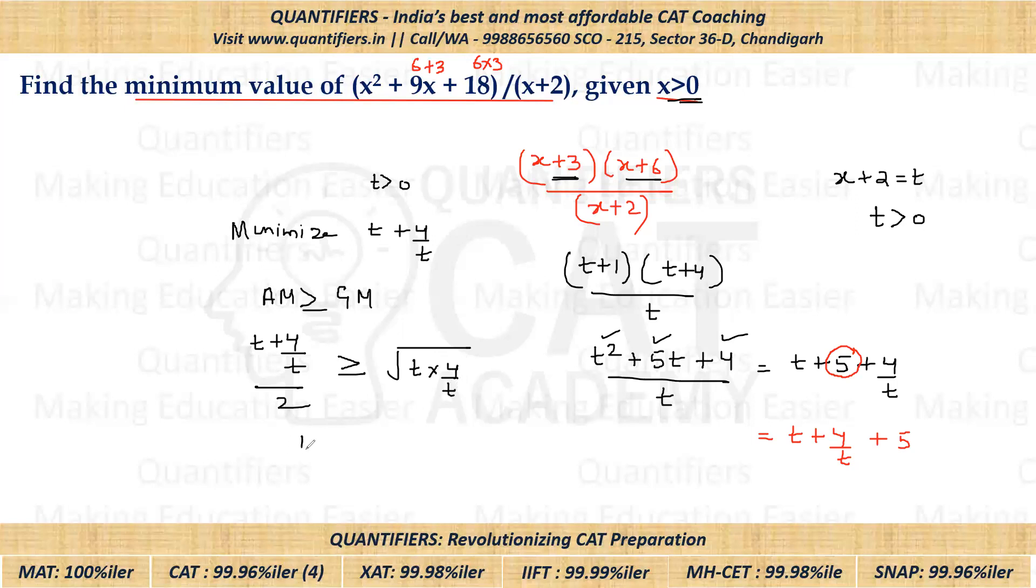From here we'll get (T + 4/T)/2, this is greater than equal to—now T and T gets canceled out—so we'll be left with square root of 4, which is 2. So here we'll finally come to T + 4/T value, that is greater than equal to 4. So this means the minimum value of T + 4/T is 4.